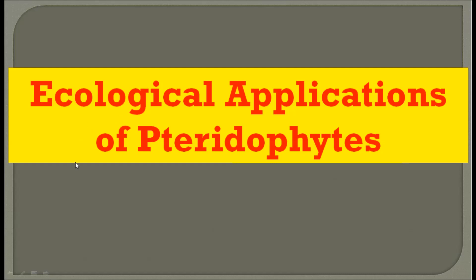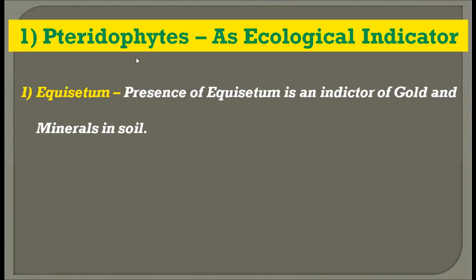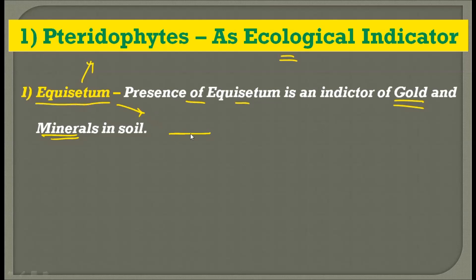Now let's begin the second part of the lecture: the ecological importance of pteridophytes — how pteridophytes are important from nature's point of view. The first ecological application is that pteridophytes can act as ecological indicators. Equisetum is an example: the presence of Equisetum on a particular land indicates the presence of gold and minerals in the soil.